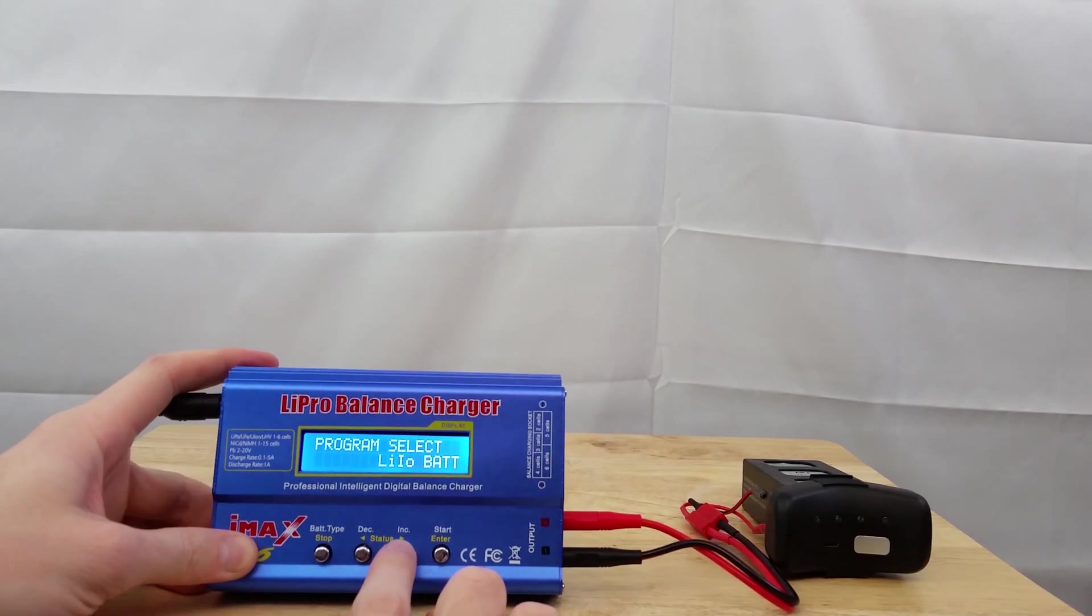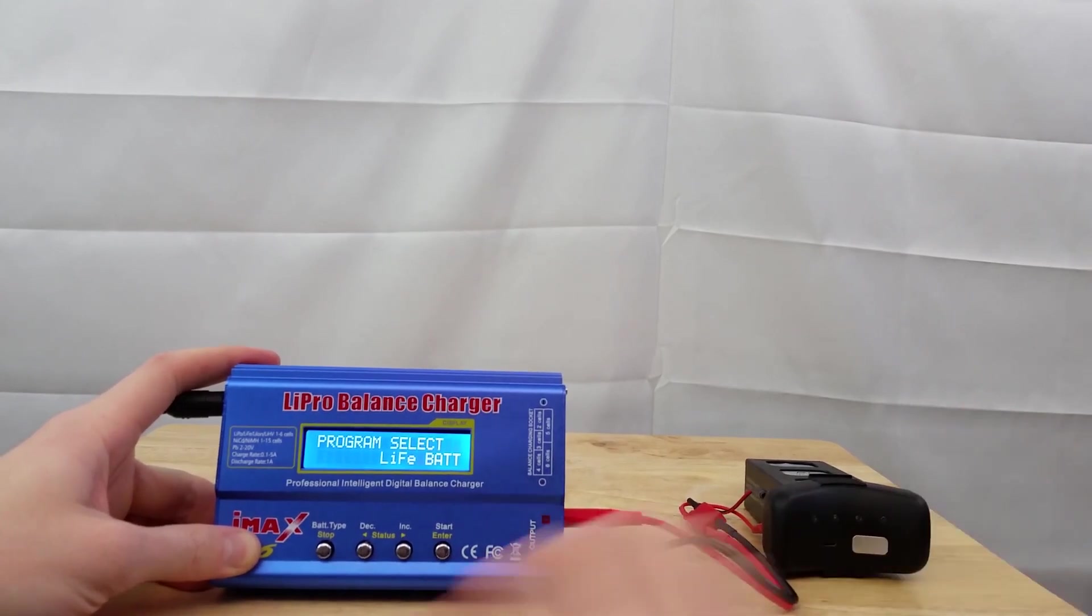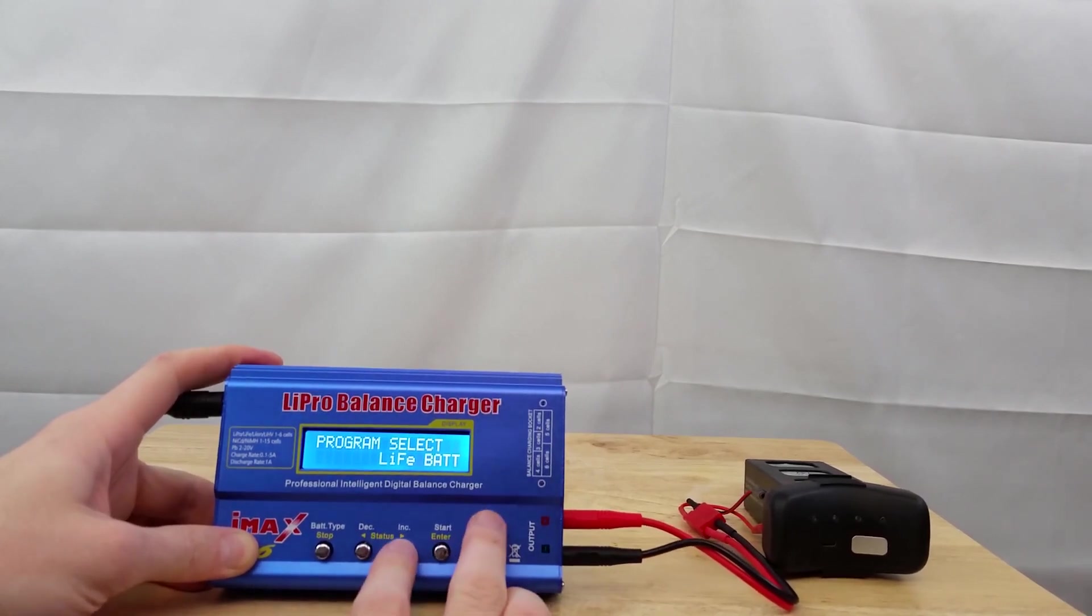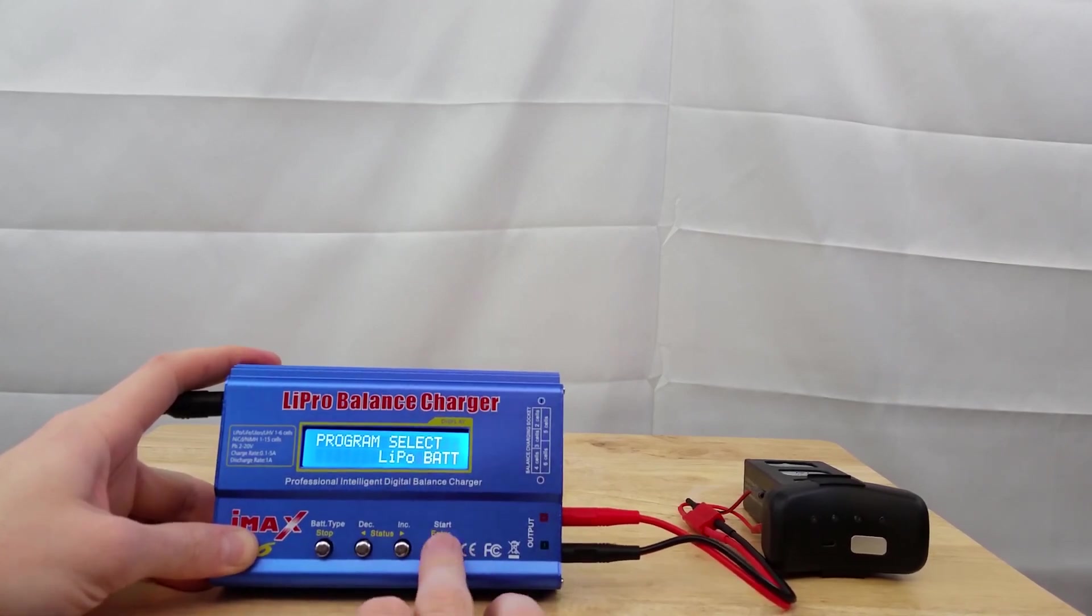And then you'll be able to scroll through the different battery types. Now this battery is actually a lithium ion. However, if you select lithium ion, it will not charge it up all the way. So select lithium polymer lipo battery. Hit enter.